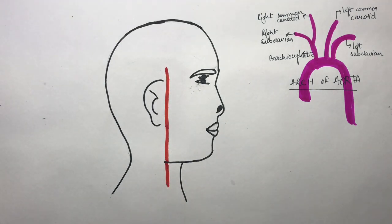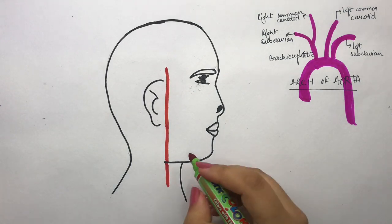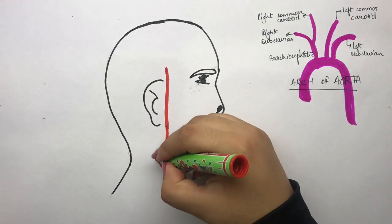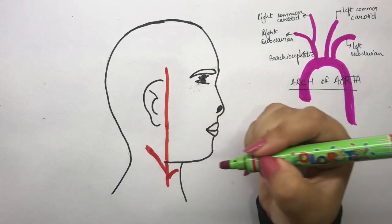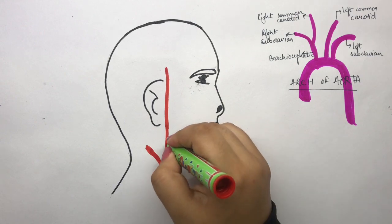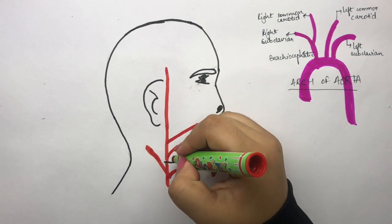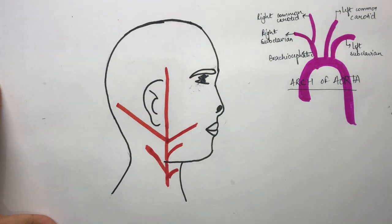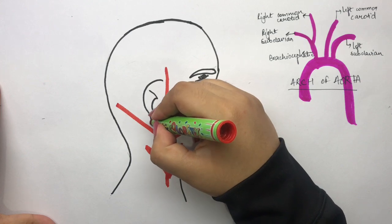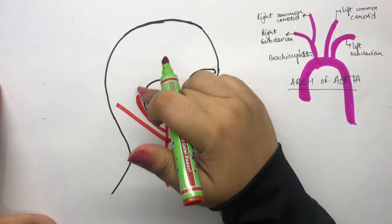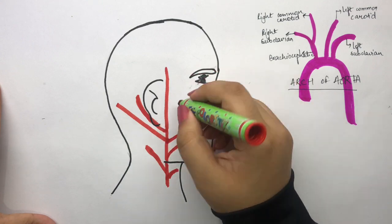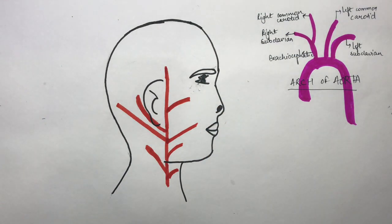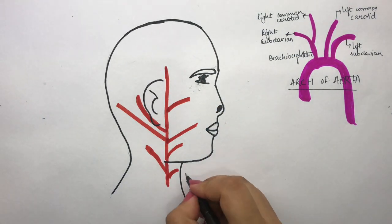The external carotid artery gives off eight branches in total. The first branch is given off anteriorly in the thyroid region. The second branch is given medially. The third and fourth are also given anteriorly. The fifth branch is given posteriorly. The sixth branch is also given posteriorly, but behind the ear. The seventh and eighth are the terminal branches.